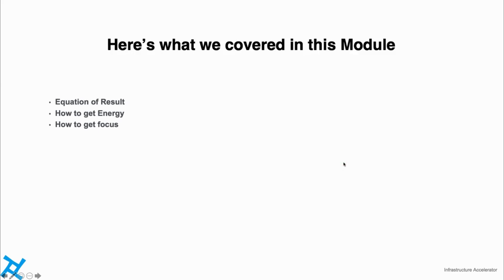Here is what we covered in this module. We figured out the equation of result: Energy × Focus = Result. I told you how to get your energy — by maintaining a schedule, sleeping on time, waking up on time, taking a bath, eating good food, wearing clean clothes. I also told you a bit about how to get your focus — avoid multitasking, avoid distractions in your life. In future modules we are going to study more about focus and the mindset method. I hope you enjoyed this module and I will see you in the next one. Thank you.